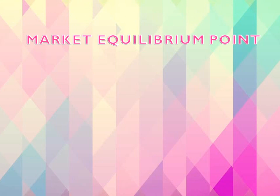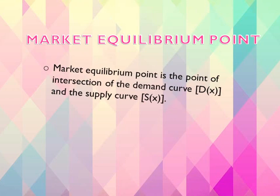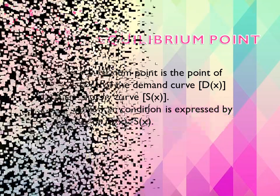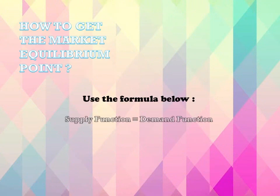The market equilibrium point is the point of intersection of the demand curve DX and the supply curve SX. The equilibrium condition is expressed by the equation DX equals SX. To get the market equilibrium point, use the formula below.